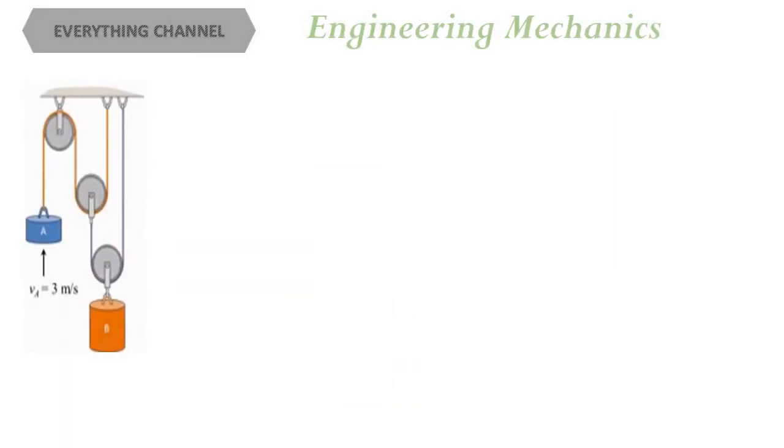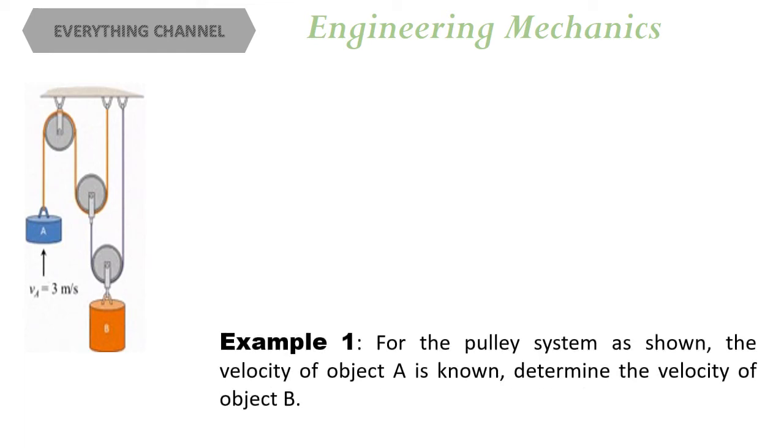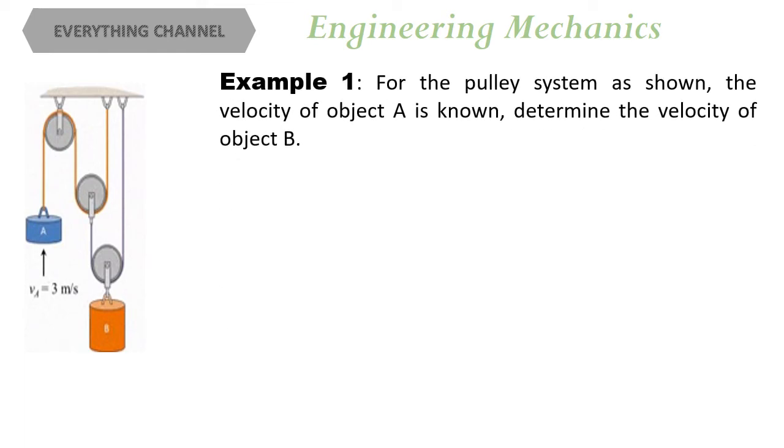Now, let's solve one problem. This problem is a little more complicated than the previous one. Again, we have two objects connected to multiple pulley systems. We know the velocity of particle A and we have to find the velocity of particle B.